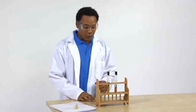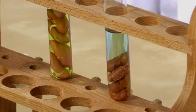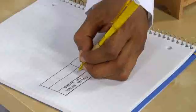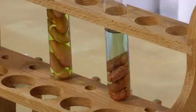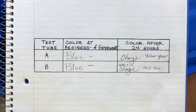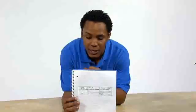After 24 hours, it looks like the bromothymol blue is doing its job. There is definitely a color change in test tube A. I'll take a minute to write down my observations in the data table. Here's the final data table: the germinating seeds in test tube A released carbon dioxide. We know this because there was a color change.